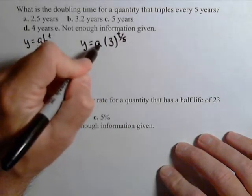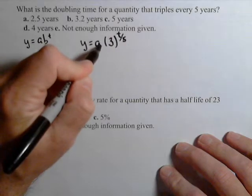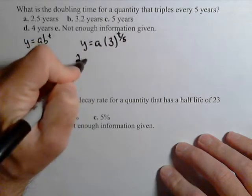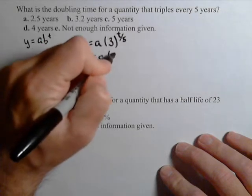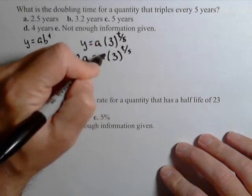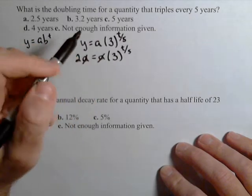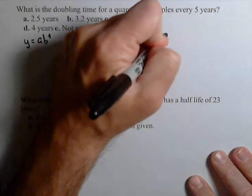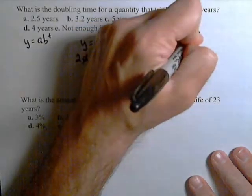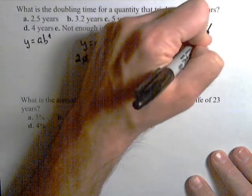I want to know when the initial amount is going to double. So if I use a as my initial amount, I want to know when it's going to be 2a because that's double a. Dividing a out on both sides, I now have the equation I want to solve. So coming up here, we have two equals three to the t over five.